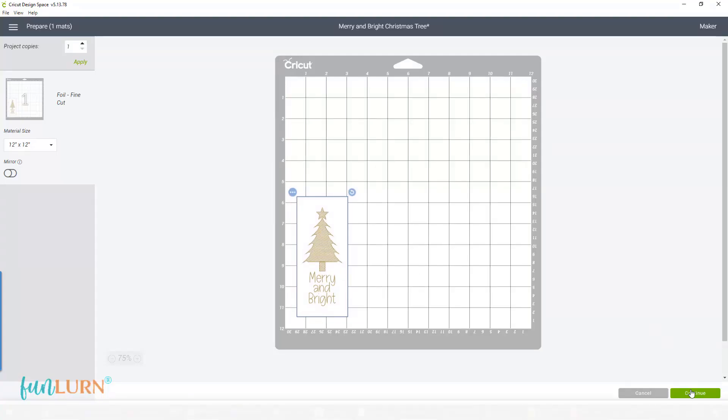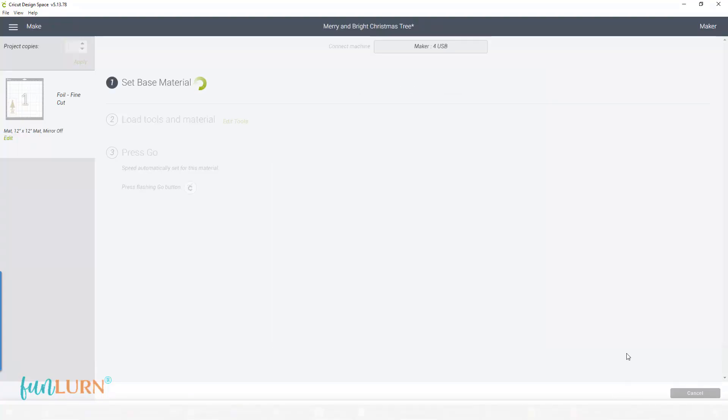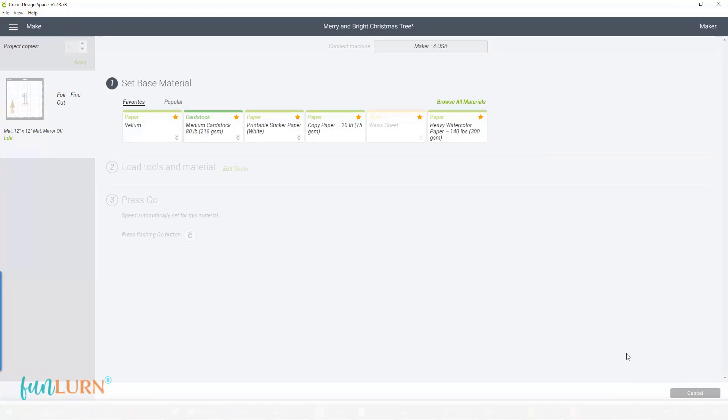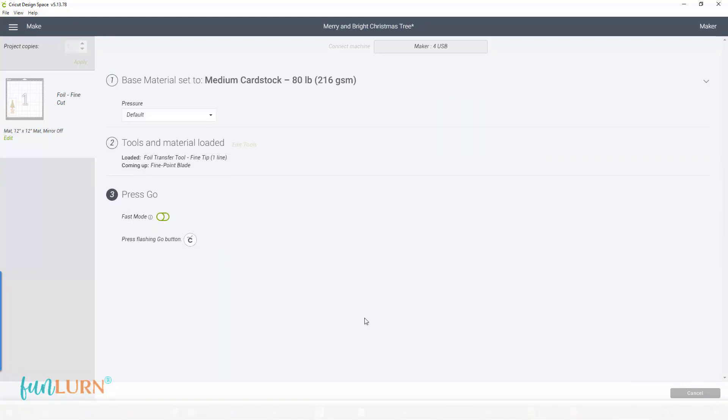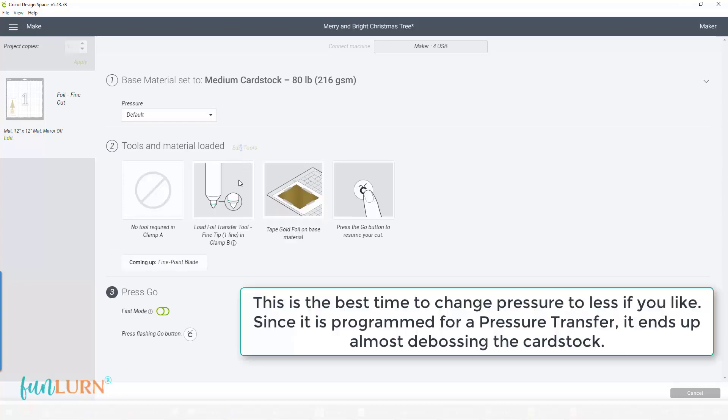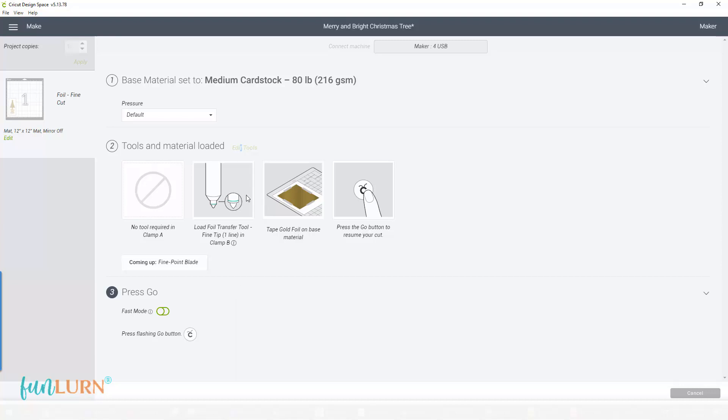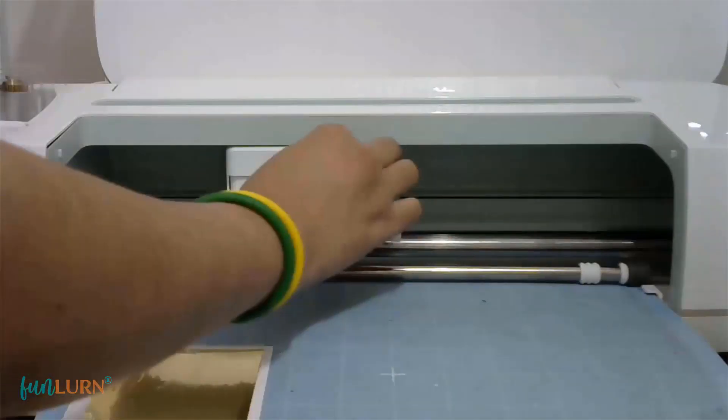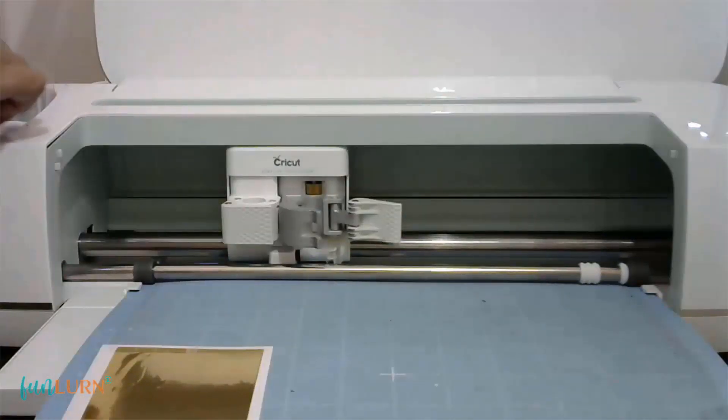Next we will click Continue. It will check for the machine. I will set the base material to be the same as the cardstock that I'm using. When I click on Edit Tools, it will show me what all things are needed. It says Load Foil Transfer Tool in the B Clamp, but we are going to use our Foil Quill Tool.